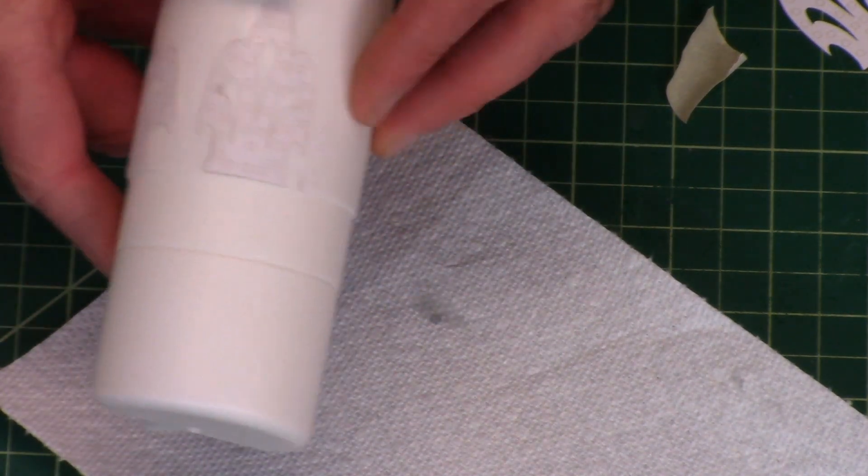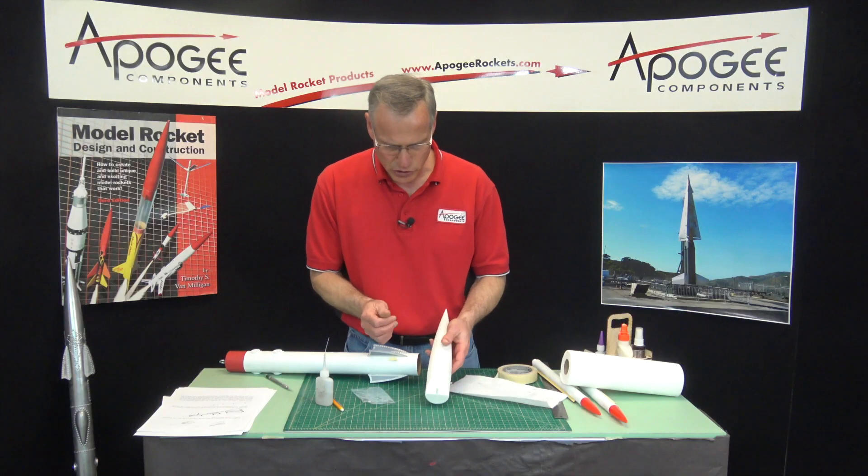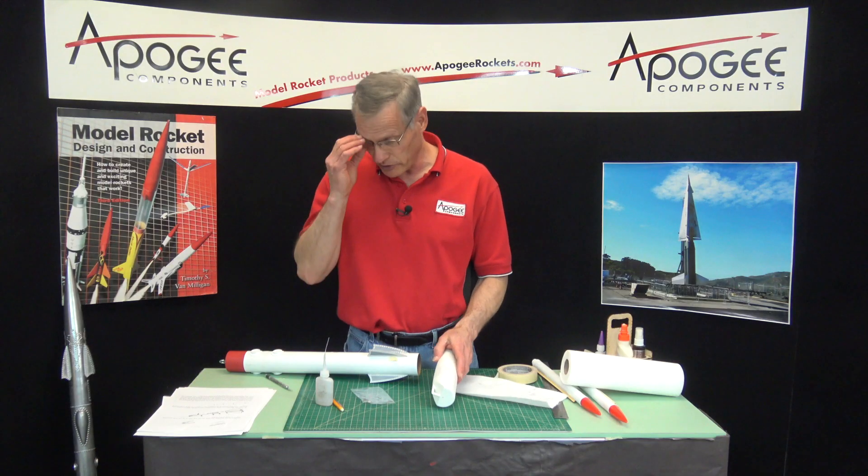All right, so I've got two of them on—that one and that one—and I'll go ahead and do the other two. And then in our next step we'll apply the rivets.